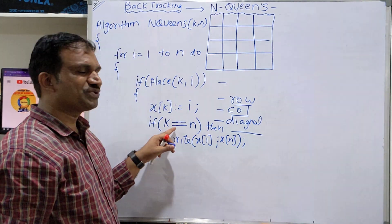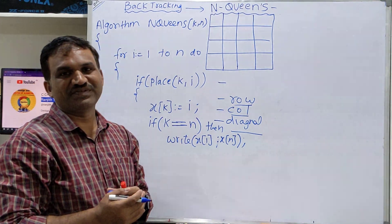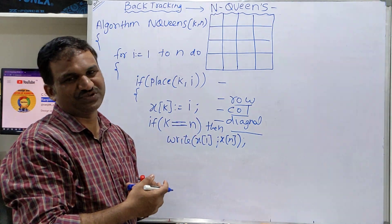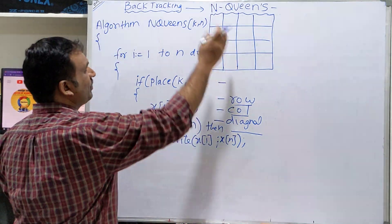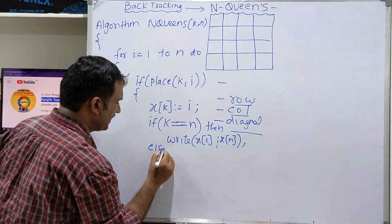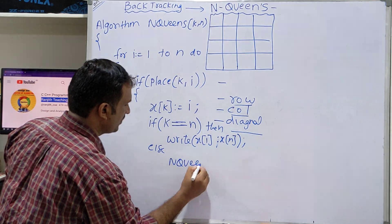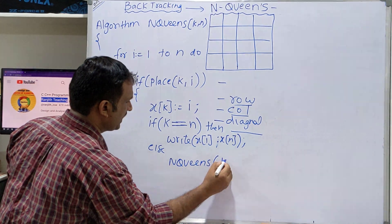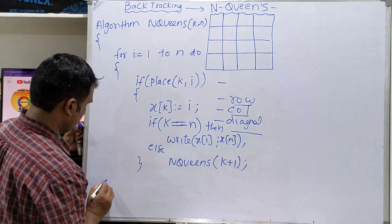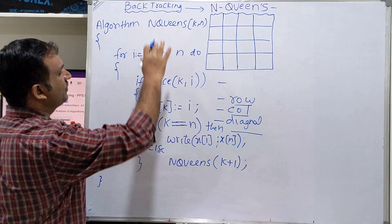If we have placed all queens, then write x[1] to x[n] as the solution. If we have not placed all queens, we call the next queen recursively using backtracking. Else, call N-Queens(k+1). This finishes the simple N-Queens algorithm.